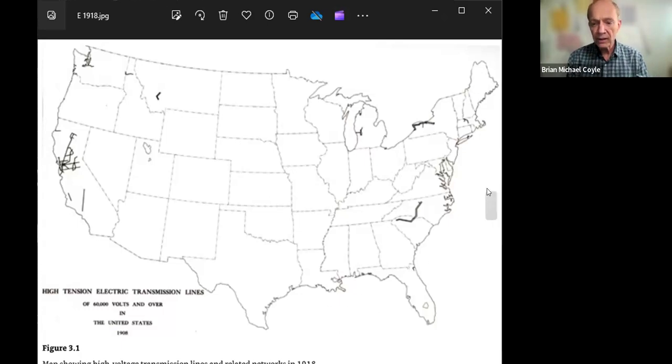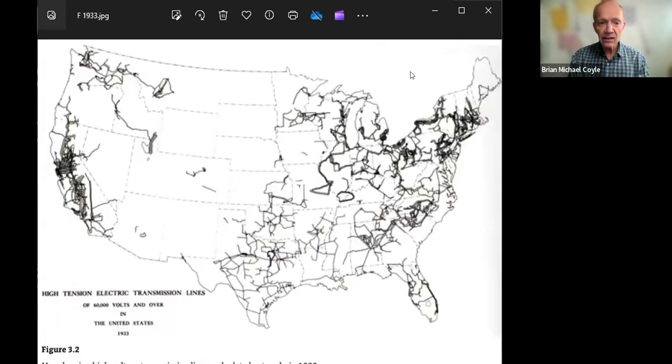Loomis invented the public utility holding company. It got utility company equity in exchange for financing generators and transmission lines. Loomis' company consolidated operations and interconnected distribution systems, which was key to reliability and reducing costs.